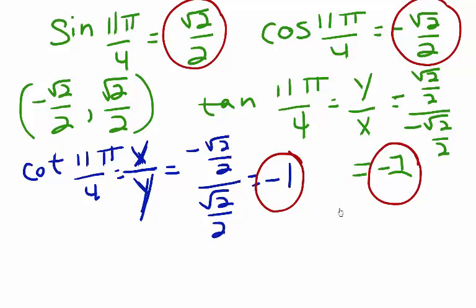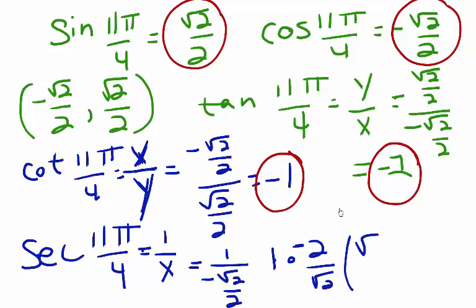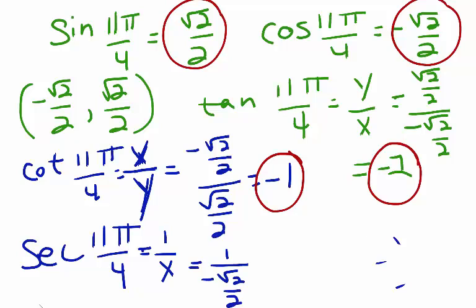Next we'll look at secant of 11 pi over 4. That's equivalent to 1 over the x coordinate, so that's 1 over negative square root 2 over 2. Multiplying by the reciprocal, that gives us negative 2 over square root 2. We can rationalize the denominator by multiplying, which gives us negative 2 square root 2 over 2. Cancelling the common factor, we're left with negative square root 2.